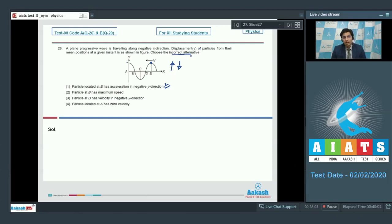Now option 2 says that the particle at b has maximum speed. Dear students, the particle at b is at the mean position and the particle at mean positions have maximum speeds indeed which makes the statement 2 as the correct statement as well and therefore it cannot be our answer.